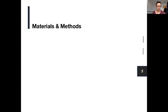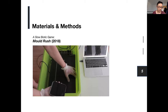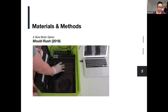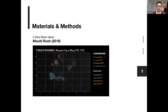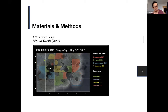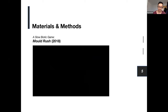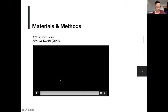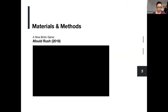The approach we took to address these challenges was to analyze an example of a slow biotic game that I had designed called Moldrush. Moldrush is an online multiplayer game that relies on the growth and death of real living microorganisms. The slow proliferation of the cells are streamed live on Twitch, and players are invited to claim or destroy patches of colonies that appear before their eyes. We evaluated three different aspects of the game: the design process of Moldrush, its resulting player experience outcomes, and unexpected observations made during the analysis.